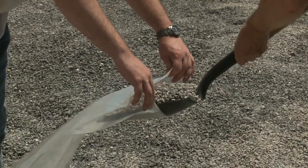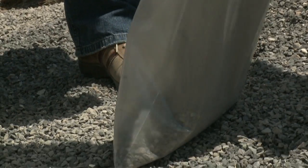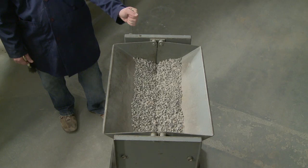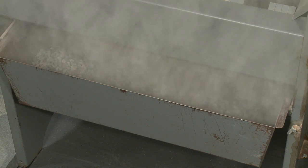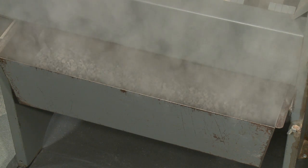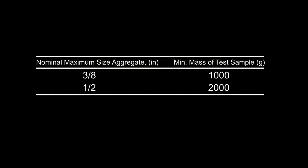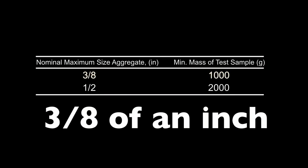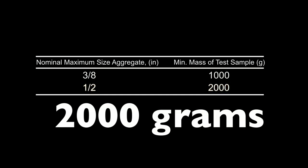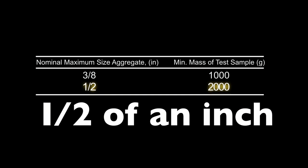Obtain the sample in accordance with AASHTO T2 and reduce to testing size in accordance with AASHTO T248. The minimum mass of the test sample is 1000 grams for aggregate with a nominal maximum size of 3/8 of an inch, and 2000 grams if the nominal maximum size is 1/2 inch.